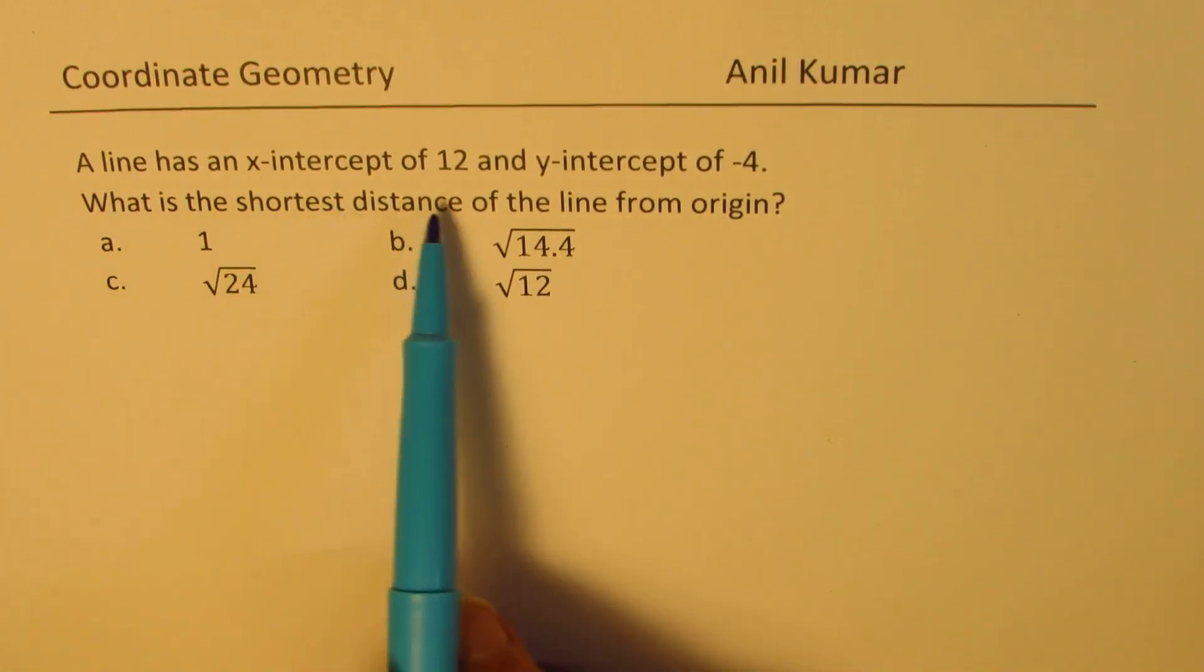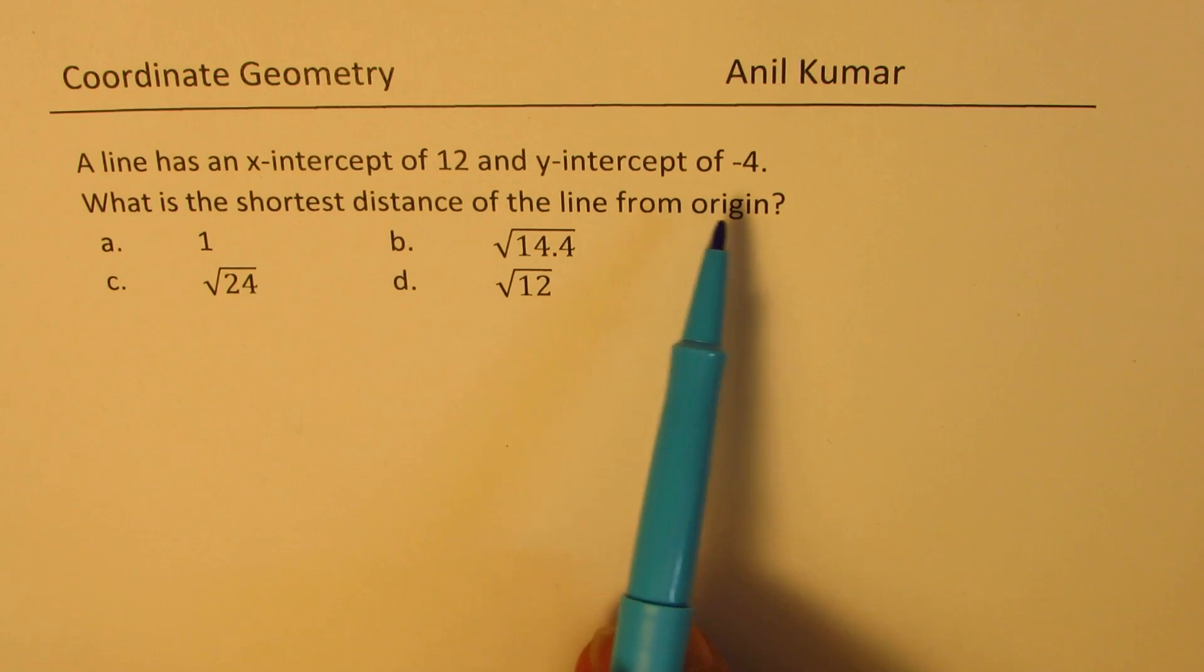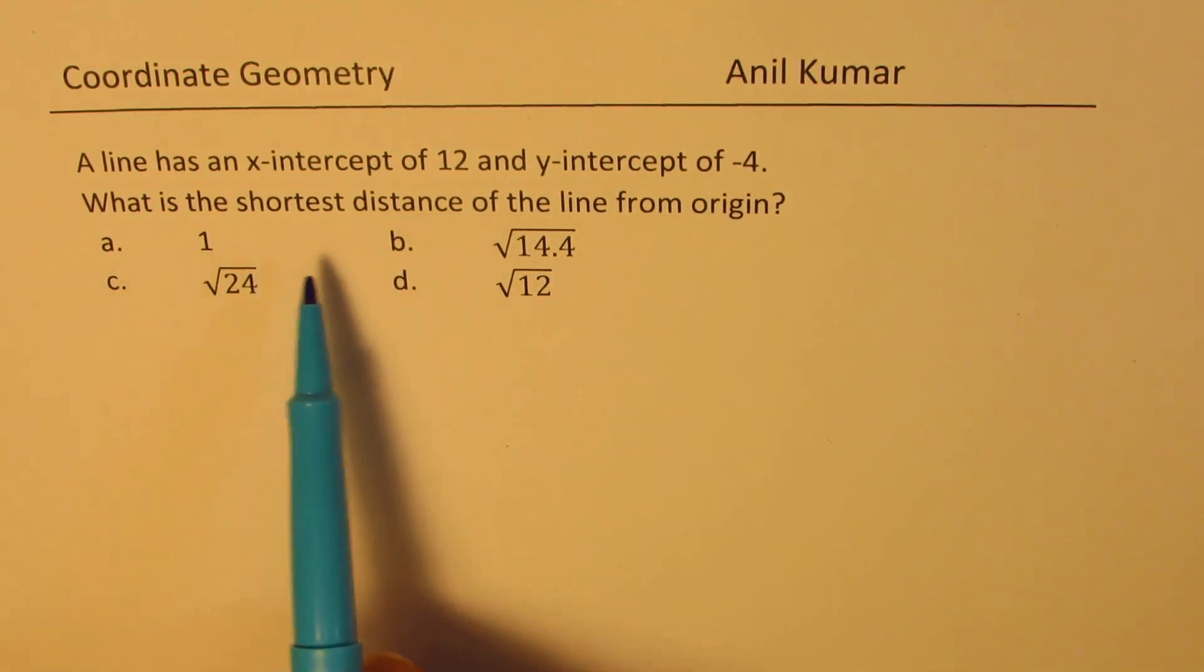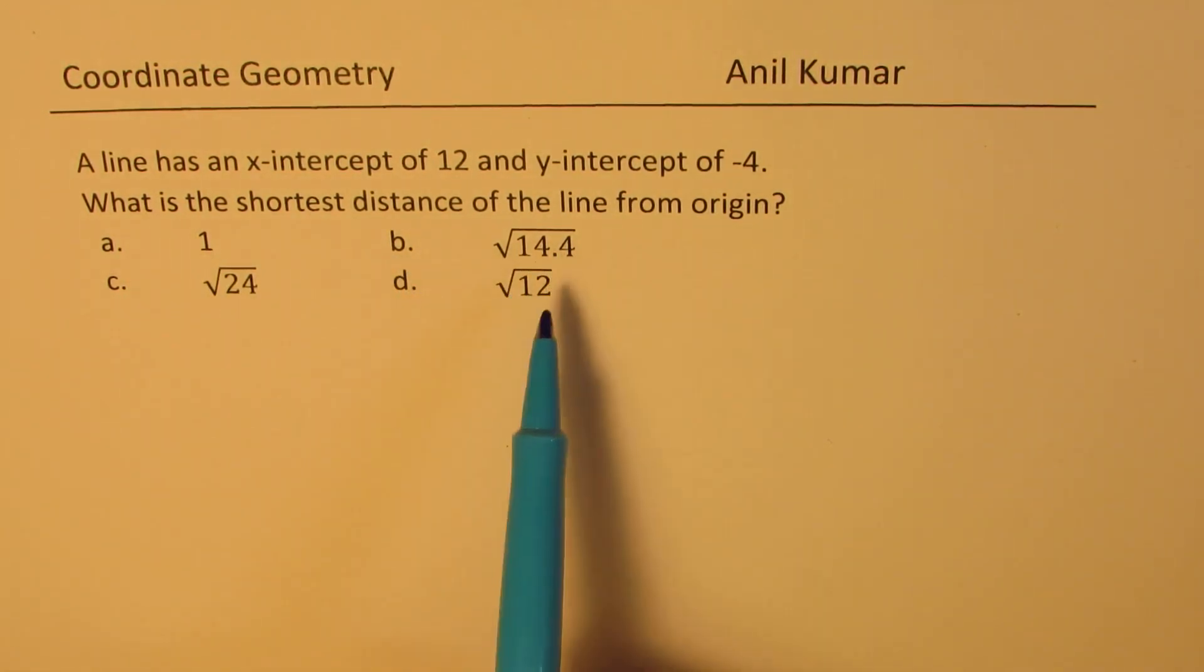A line has an x-intercept of 12 and y-intercept of minus 4. What is the shortest distance of the line from the origin? Four choices are given to you. You can always pause the video, answer the question, and then look into my suggestions.